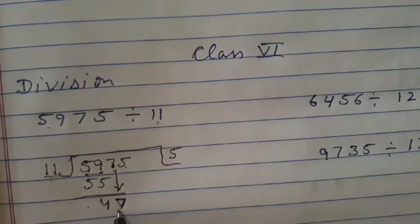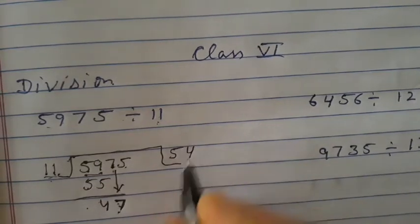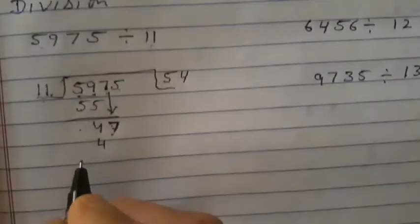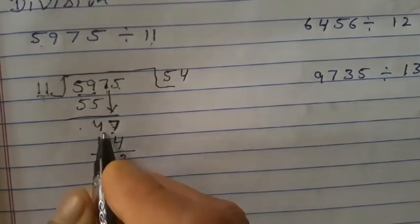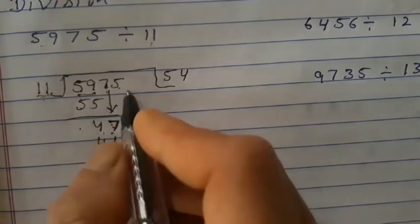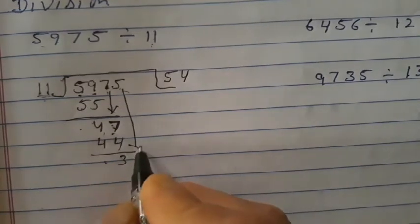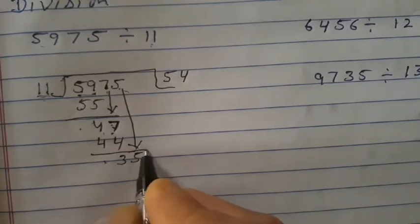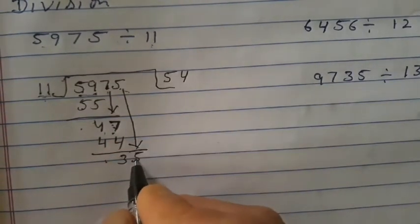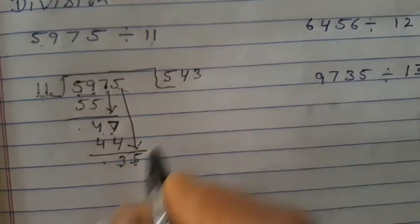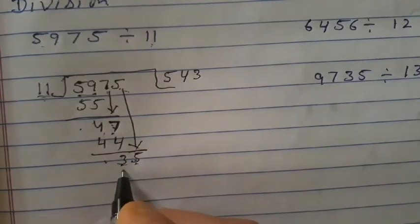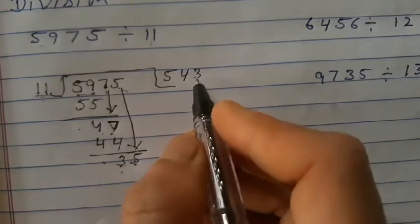So therefore you will take 11 times 4 is 44. Now 5 is taken here. Copy 5 here, take 5 here: 35. 11 times 4 is 44, which is greater, so therefore you will take 11 times 3 is 33.